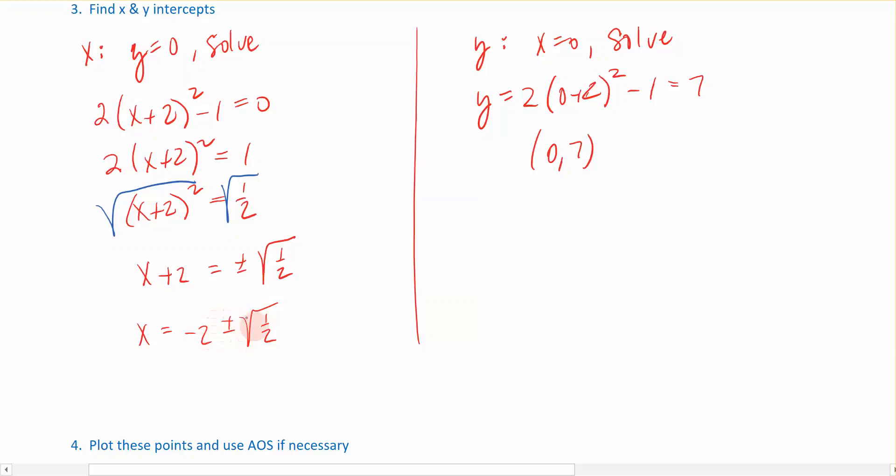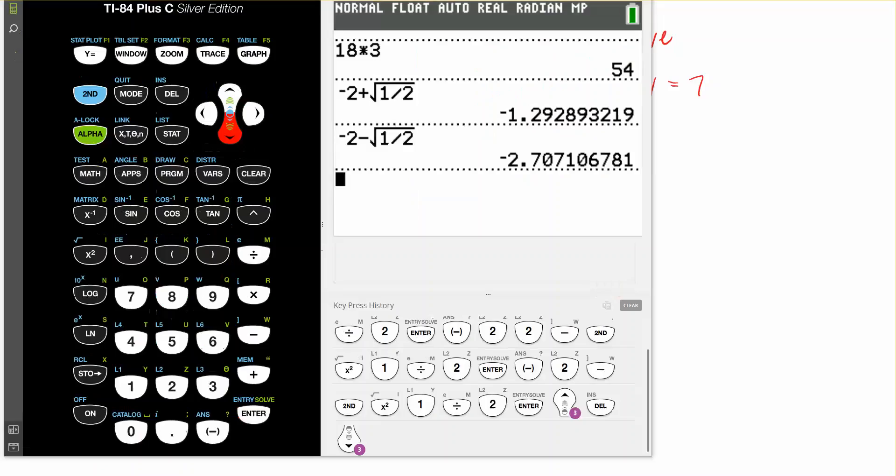But I don't know where to put those numbers on the x-coordinate system, because I don't know what this number is. So I'm going to do -2 + √(1/2) in my calculator, and I'm going to pull that up. So on my calculator, I have taken -2 + √(1/2) and found the decimal value, and -2 - √(1/2) and found the decimal value. So these are the two places, approximately, that it's going to cross the x-axis, and I'm going to plot them on my graph right now.